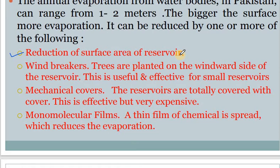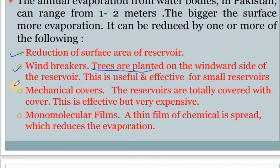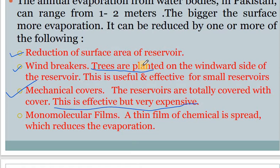Windbreakers should be applied in the form of trees planted near the rivers or lakes. Because of these trees, winds will not be able to reach the lake and reservoir very easily, which will ultimately reduce some of the evaporation. Sometimes mechanical covers are also used — artificial covers are laid over rivers, lakes, or ponds so that they are not exposed to sunlight, reducing evaporation. However, this method is very expensive when the catchment area is very large.